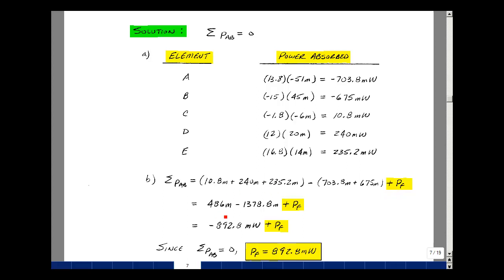Adding all these up, we get 486 milliwatts. And for this summation, we get a minus 1378.8 milliwatts, and then lastly, the power absorbed by element F. Adding these two together, we get a minus 892.8 milliwatts.